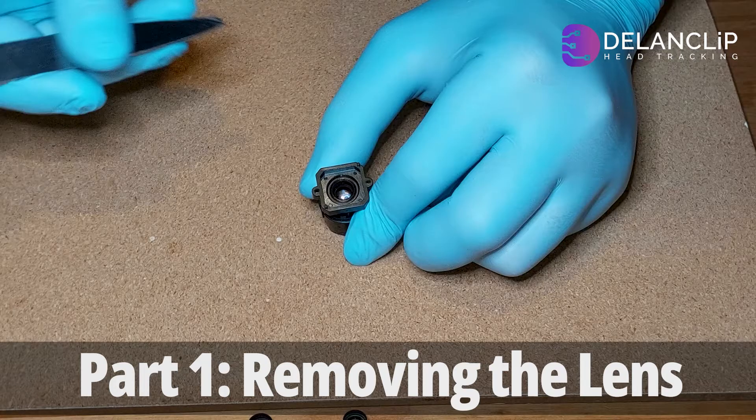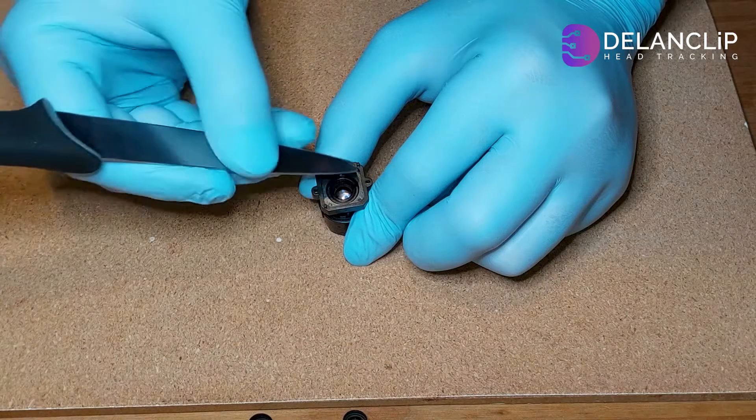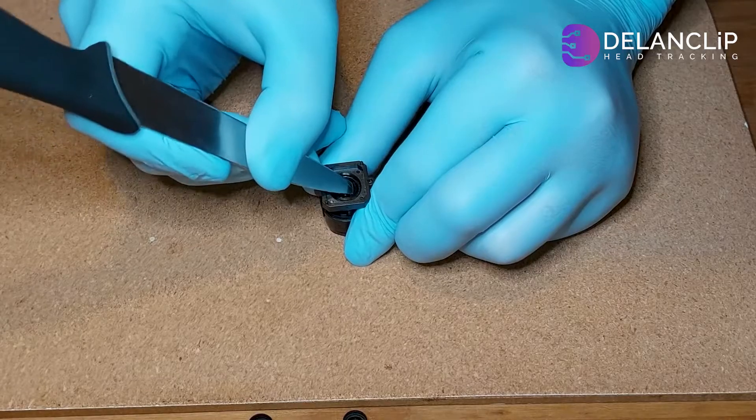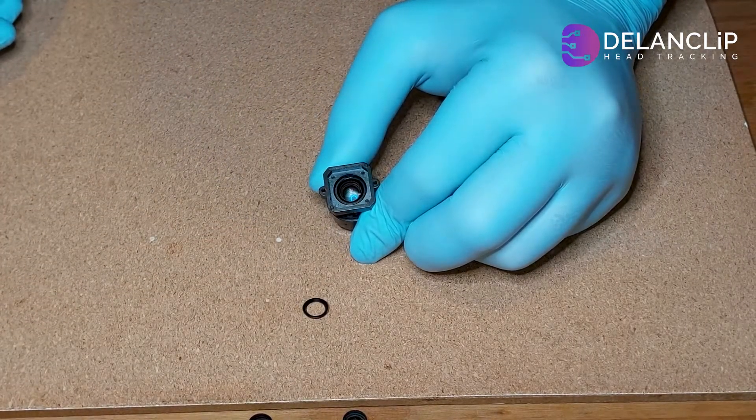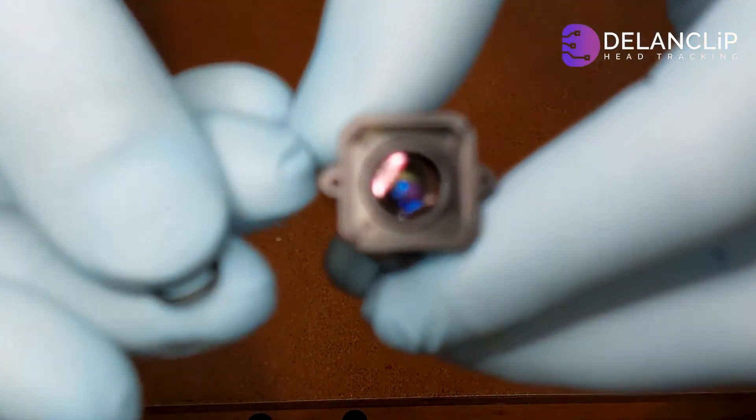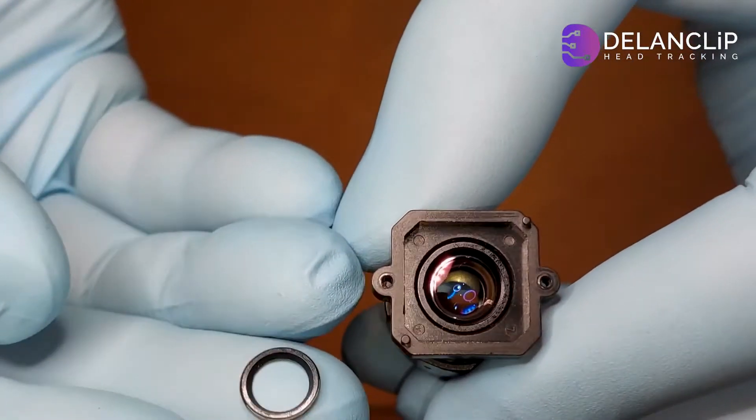Step 1. Let's start by removing the lens from the camera. First, carefully insert the edge of your knife under the lens ring. Gently lift the ring and remove it from the camera body. Once the ring is off, you can start extracting the lens itself.